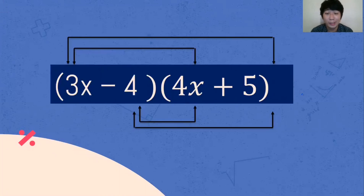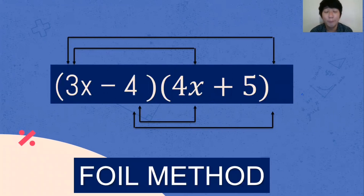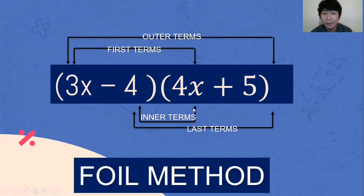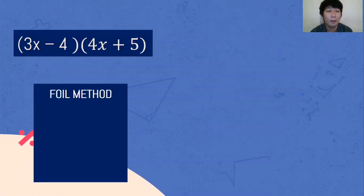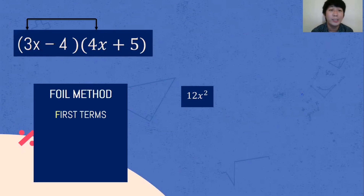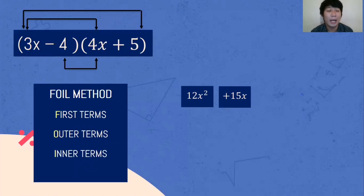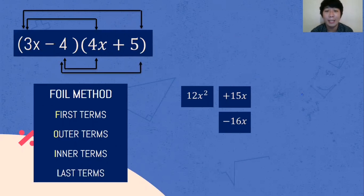What if we are multiplying two binomials? We will be using the FOIL method, where F stands for the first terms: 3x multiplied by 4x. Then outer terms: 3x multiplied by 5. Then inner terms: negative 4 and 4x. Then last terms: negative 4 and 5. First term multiplied by first term, 3x multiplied by 4x, that is 12x squared. Outer terms, 3x multiplied by 5, that is 15x. Inner terms, negative 4 multiplied by 4x, that is negative 16x. Last terms, negative 4 multiplied by 5, that is negative 20.